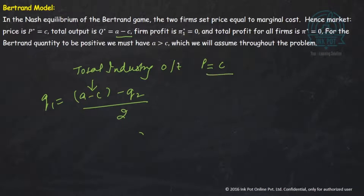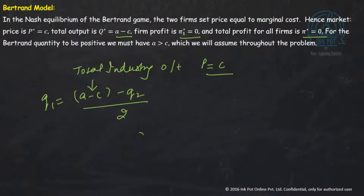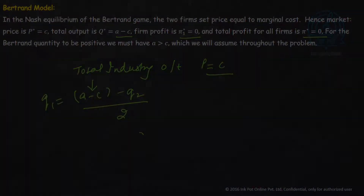Under Bertrand, the supernormal profit of firm 1 and firm 2 are zero. So the quantity will be zero if A equals C. But if A is greater than C, the Bertrand quantity can be positive, which is what we assume here — the firm has sufficient capacity to produce the goods, so that production revenue exceeds cost. This will become clearer in an additional video on capacity constraints.